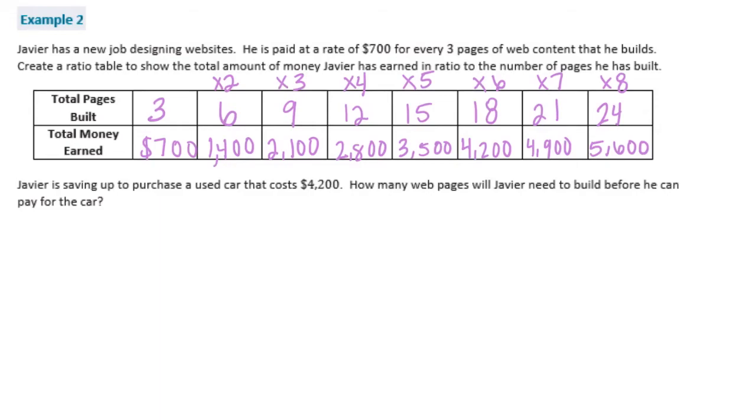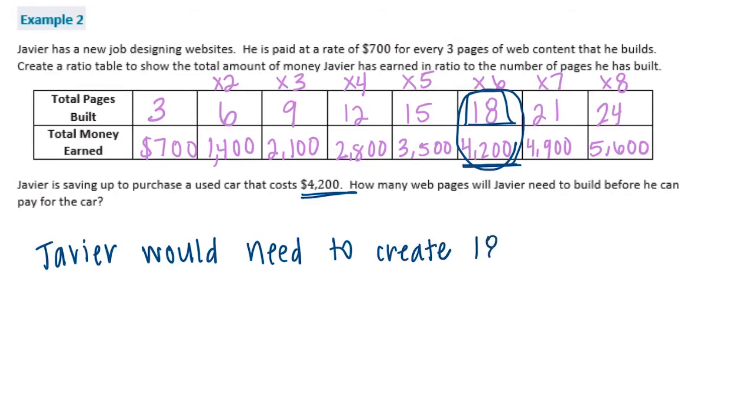Javier is saving up to purchase a used car that costs $4,200. How many web pages will Javier need to build before he can pay for the car? So we can look up at our chart here that we've created and we see we're looking for a car that costs $4,200. So here is $4,200. He would need to make 18 web pages in order to pay for that car. So let's say Javier would need to create 18 web pages to buy the car.